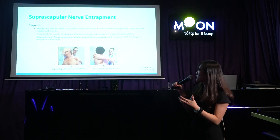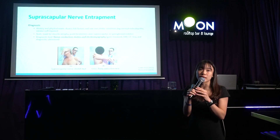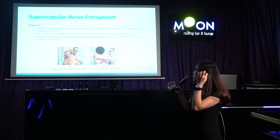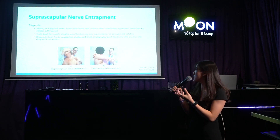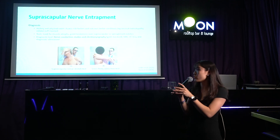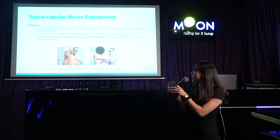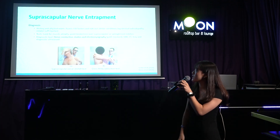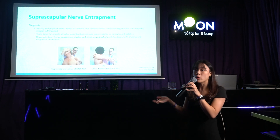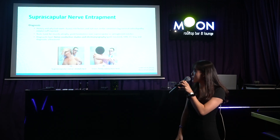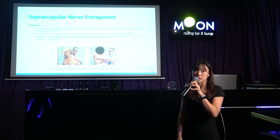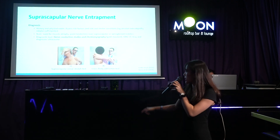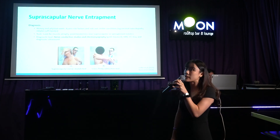For diagnosis, the gold standard is nerve conduction testing and EMG. MRI or CT scan is used to identify masses, X-ray to rule out bone fractures, and diagnostic ultrasound is also used. Clinically, practitioners look for muscle atrophy and point tenderness. On the physio side, two common special tests are the suprascapular nerve stretch test and the cross-body adduction test.